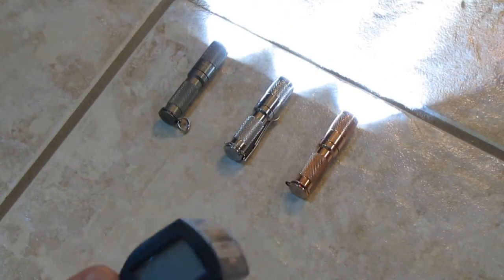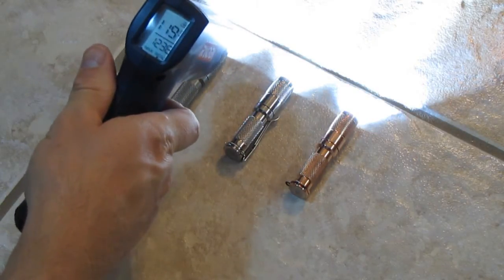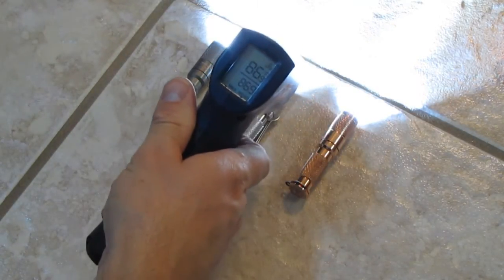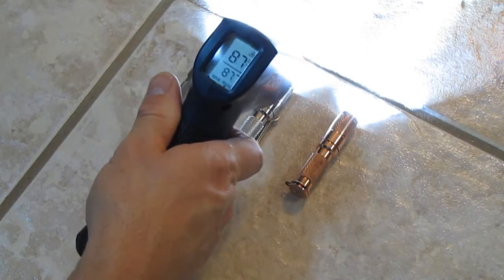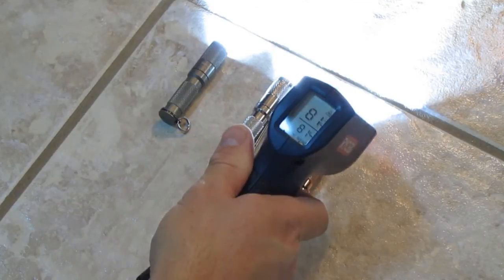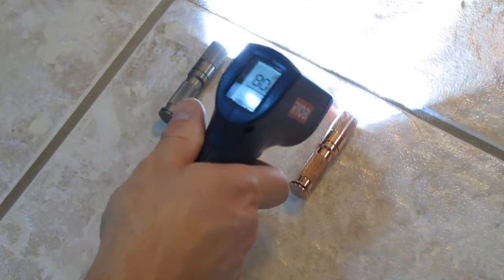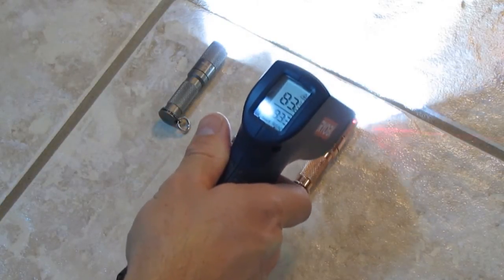Okay, I did shut off the camera for a minute and we're back to them again. The aluminum is 123. Stainless steel is 87. And the copper light is 82, 83.